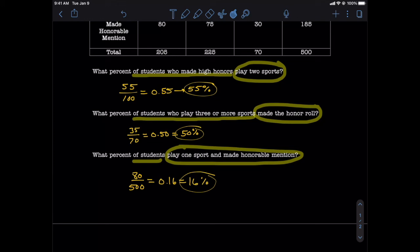I'd like to point out a couple of things about this last question. If the question had read 'what percent of students who play one sport,' then we would have used the total number of students who play one sport. Without the word 'who' in there though, we lose our qualifier and we have to use the grand total of 500. An equivalent way of asking this last question here would be: if a student were selected at random, what is the probability that that student plays one sport and made honorable mention? In that case, it would have been much more clear to us that we needed to use the grand total because we didn't have the phrase 'percent of.'